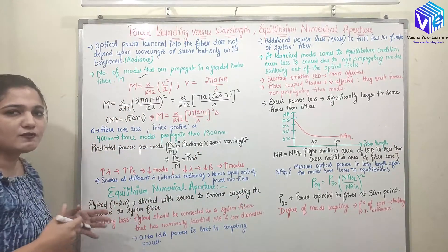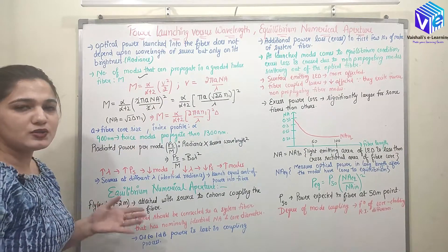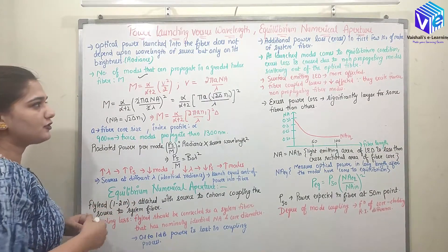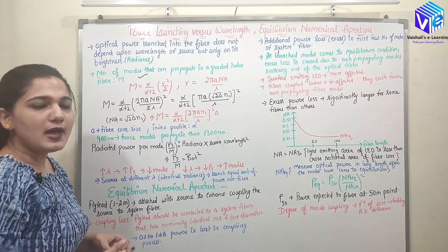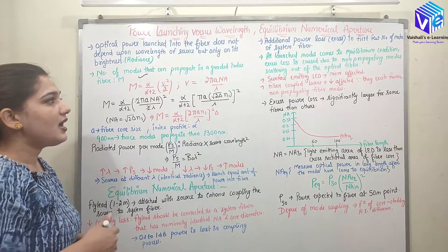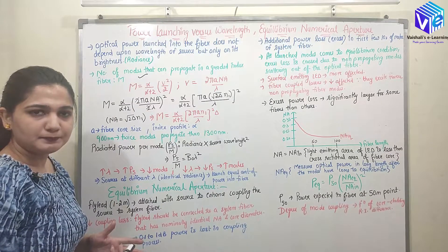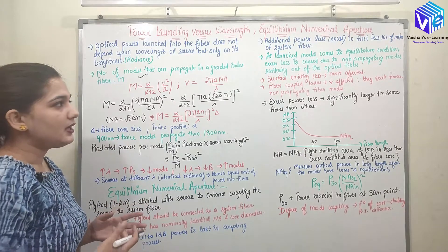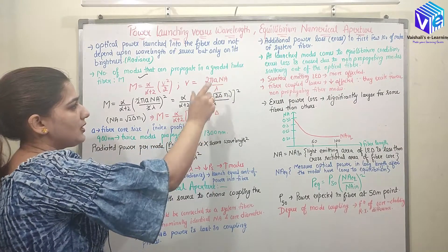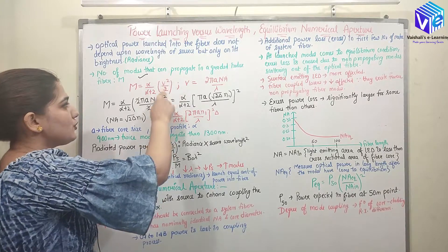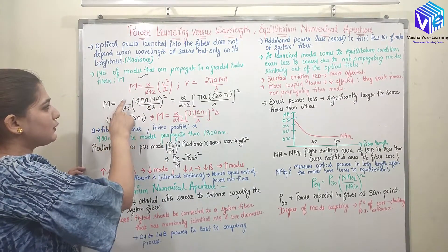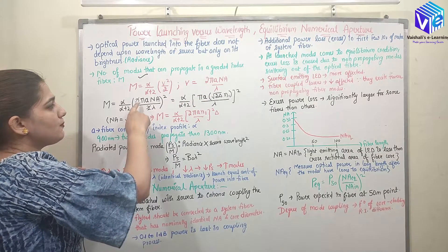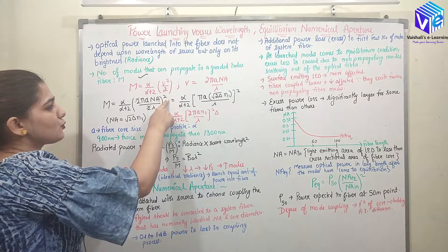The number of modes for a graded index fiber is given by (α / (α + 2)) × (V² / 2), where α is the profile parameter. Here V = (2πa × NA) / λ, where λ is the wavelength of the light, a is the core radius, and NA is the numerical aperture. Substituting V, the number of modes becomes (α / (α + 2)) × ((2πa × NA) / (2λ))².